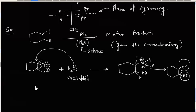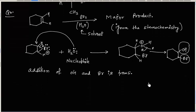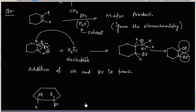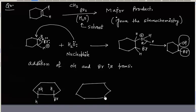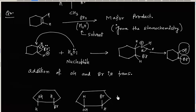This is the final product — OH and Br are added from opposite sides, so addition of OH and Br is trans. If we show the stereochemistry, two products are obtained: in one product OH is up and Br is down, and in another OH is down and Br is up. These two products are an enantiomeric pair.